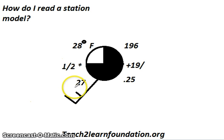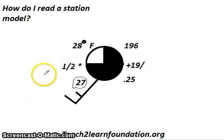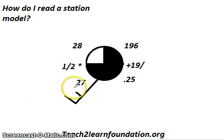Continuing on is the dew point — this 27 right here — which is again in degrees Fahrenheit. The dew point is the temperature at which precipitation will occur. So the temperature is 28 degrees Fahrenheit and the dew point is 27 degrees Fahrenheit, which explains, since they're so close, why it is snowing.